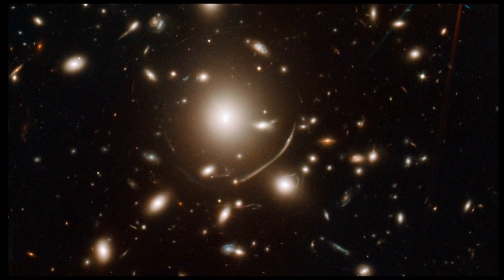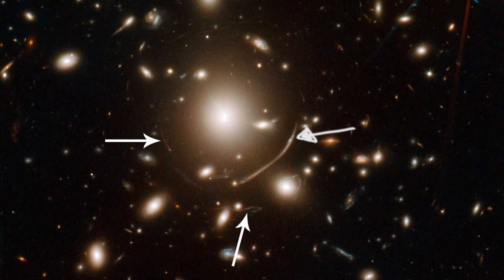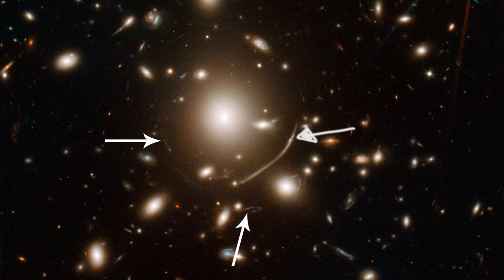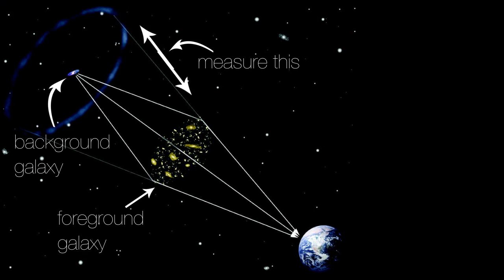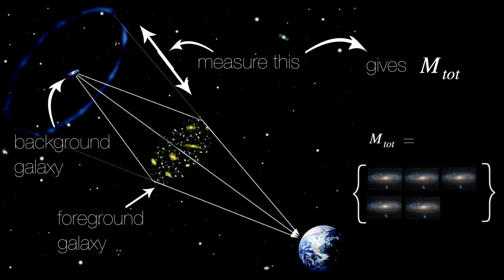So how do we detect this? Gravitational lensing. See this picture here? See those arcs and smears? That's caused due to the light being bent by gravity. By measuring how background galaxies are distorted by the cluster in front of it, astronomers can measure the mass of the cluster. And yet again it turns out the calculated mass is five times larger than what mass all the stars, gas and dust could provide.